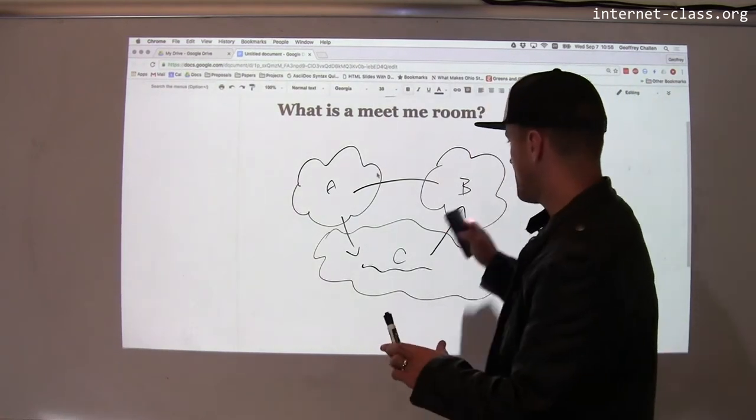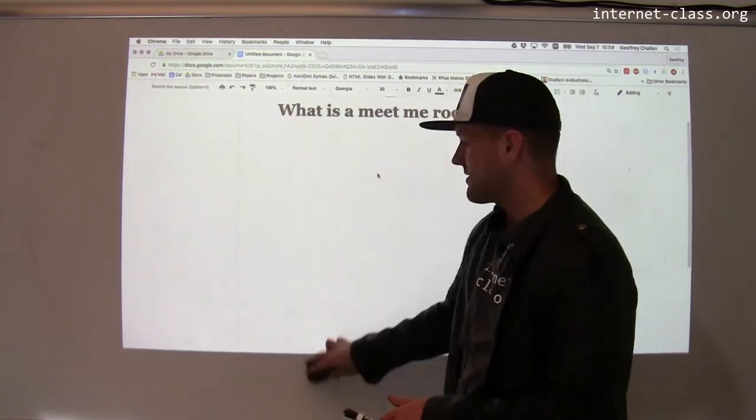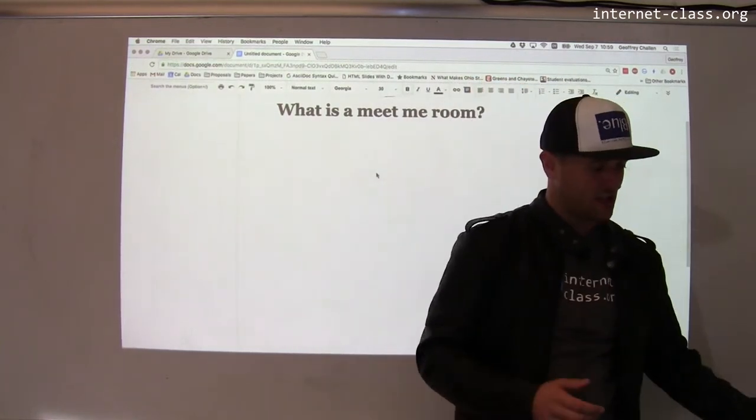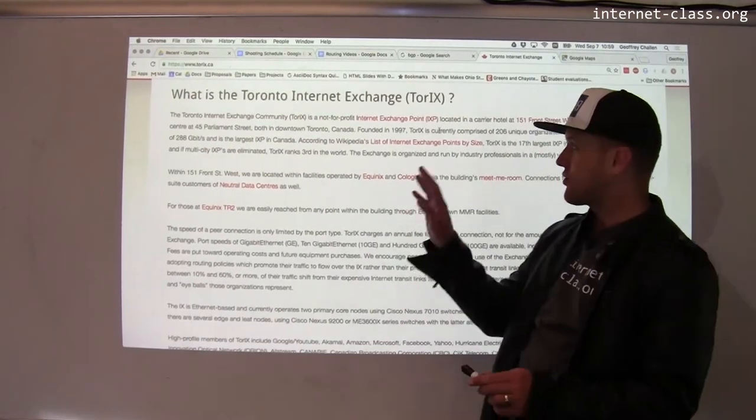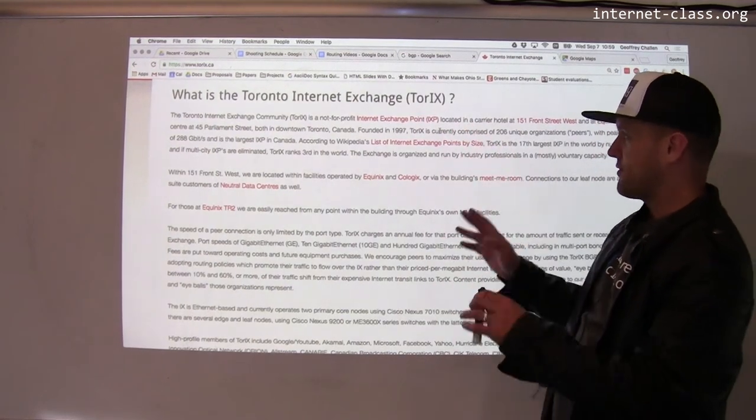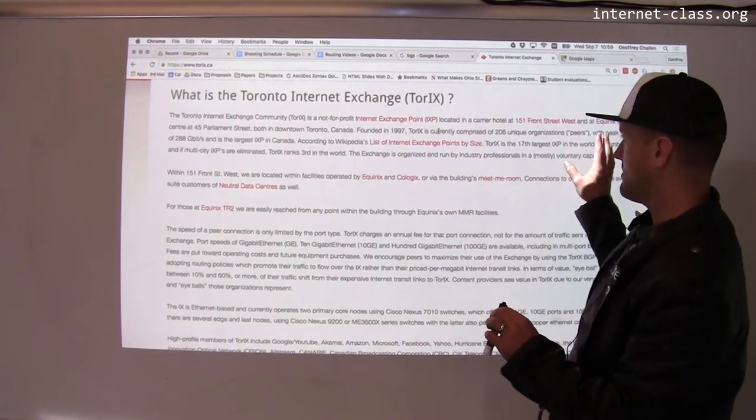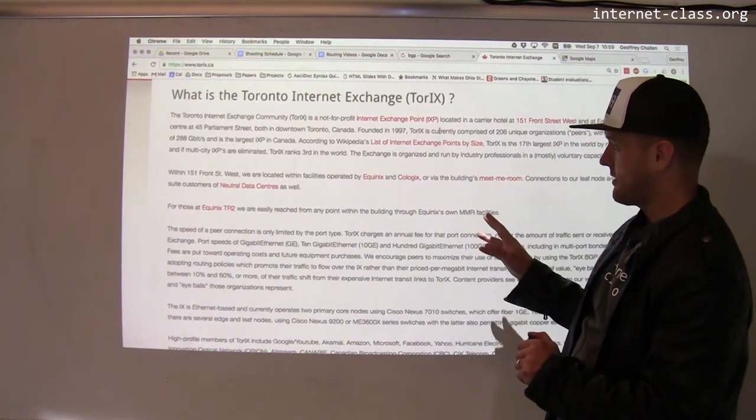So there's a big internet exchange point in Toronto. It's an interesting example of internet infrastructure that's actually fairly publicly visible. It's known as the Toronto Internet Exchange. It's a not-for-profit. It's located in a carrier hotel and the address of this place is right on their website.